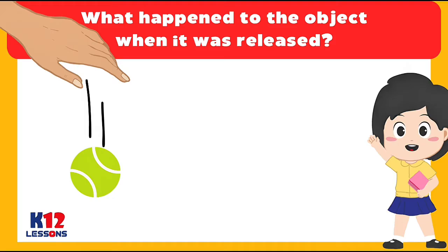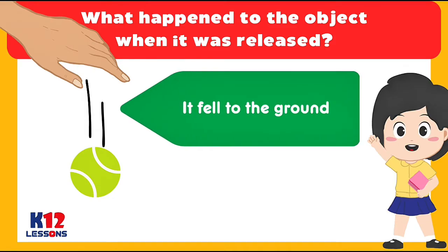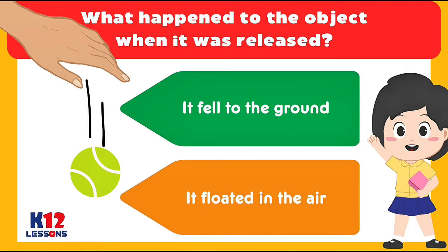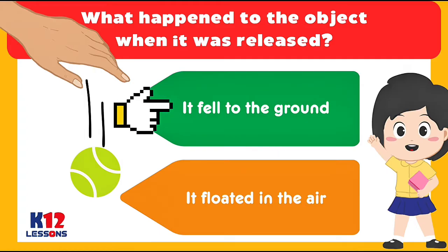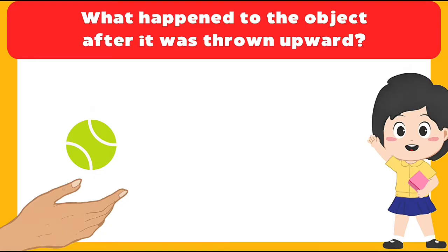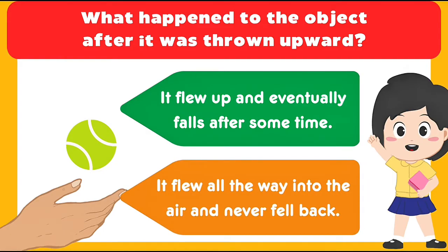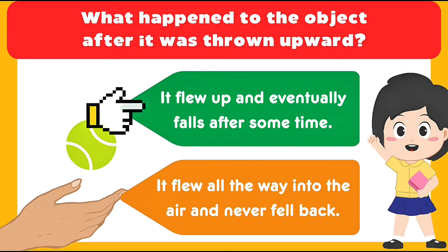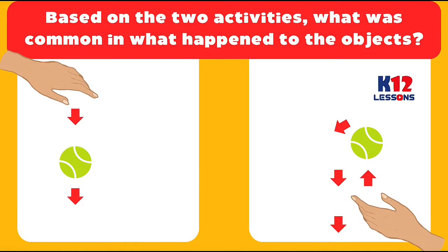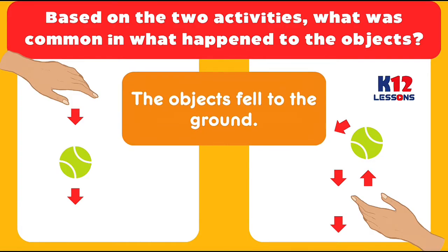What happened to the object when it was released? It fell to the ground. It floated in the air. What happened to the object after it was thrown upward? It flew up and eventually falls after some time. It flew all the way into the air and never fell back. Based on the two activities, what was common? The objects fell to the ground.